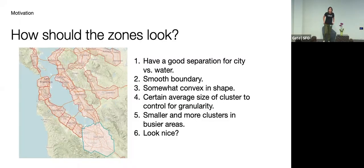So very intuitively, how should these zones look like? I asked around some of the colleagues and these are the answers I get. So one, they should probably have a good separation of city and water. So if we have a zone that has both city and water, and imagine you give like a three times surge multiplier, couriers are like, what the heck is this?